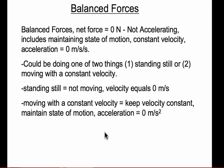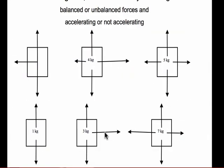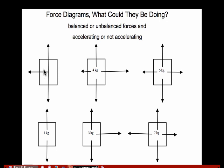Now we go back to the diagrams. The first thing to ask: balanced or unbalanced? This one should look clear — it's unbalanced, and the net force is to the left. Therefore we know it is either speeding up or slowing down. But just by looking at the diagram we don't know which. If it's going to the left and the net force is to the left, it's speeding up. If it's going the other way and something is pushing in the opposite direction, then it's slowing down.